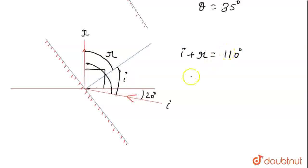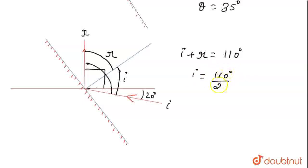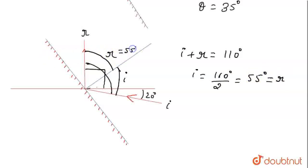Since the incident angle and the reflected angle are equal, each is 110 divided by 2, which equals 55 degrees. So the incident angle is 55 degrees and the reflected angle is also 55 degrees. The value of I and R is 55 degrees.